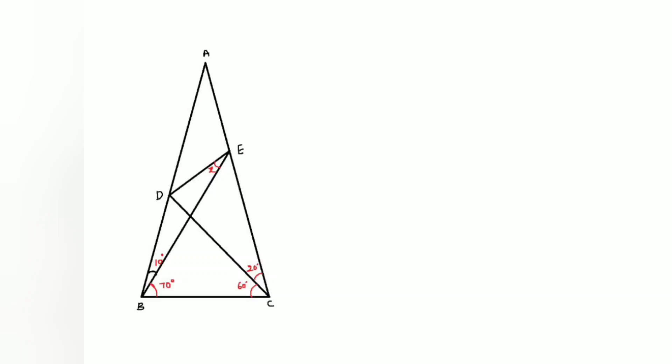Given triangle ABF, angle B is 80 degrees and angle C is also 80 degrees, which means it's an isosceles triangle.